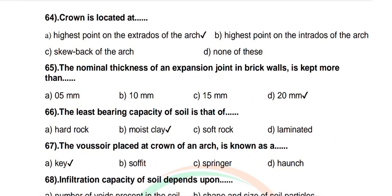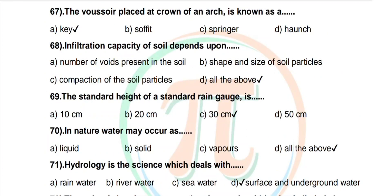Question 66: The least bearing capacity of soil is that of — options: hard rock, moist clay, soft rock, laminated rock. Correct answer: moist clay. Question 67: The voussoir placed at the crown of an arch is known as — options: key, soffit, springer, haunch. Correct answer: key.